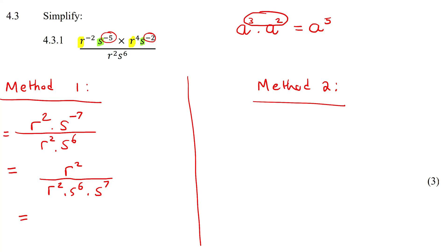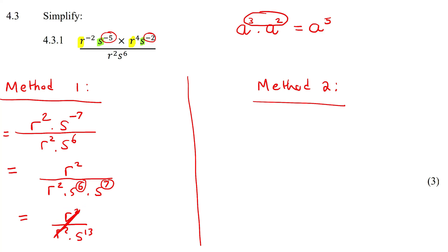Now at the bottom I've got two s's, so I add those exponents — that becomes s to the 13. I can also see these two r's are exactly the same, one on top and one on bottom, so they cancel out. What we're left with is s to the 13 at the bottom, and nothing at the top, so we put a 1. That's the answer.